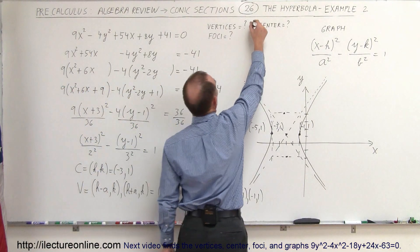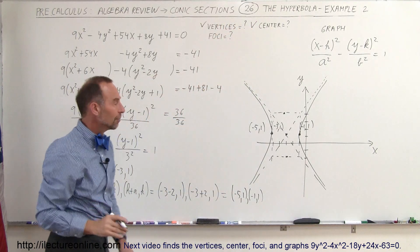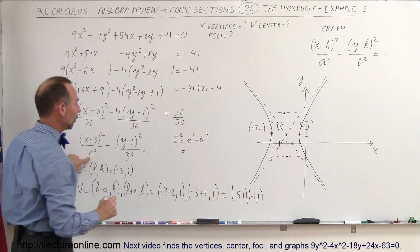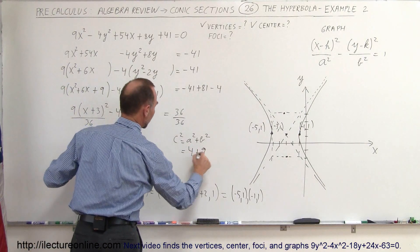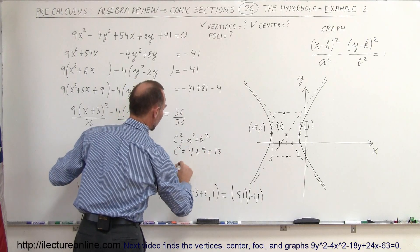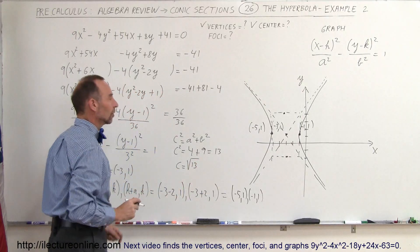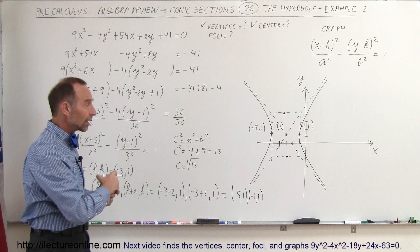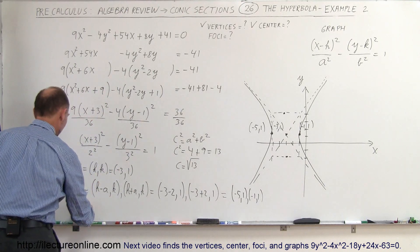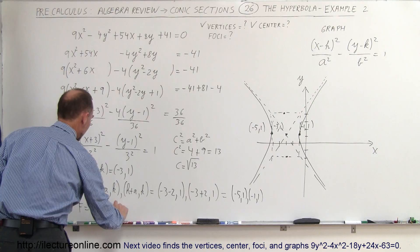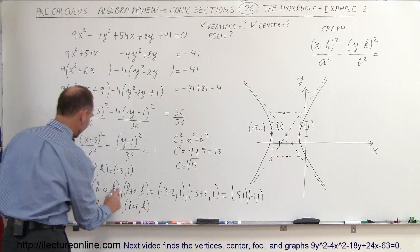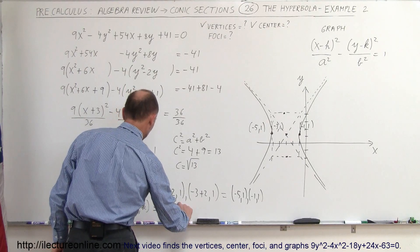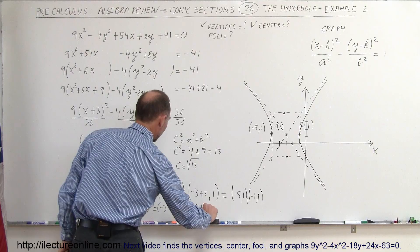Now for the foci. We use the formula c squared equals a squared plus b squared. Here a squared equals 4 and b squared equals 9, so c squared equals 13, meaning c equals the square root of 13. The foci are found by adding and subtracting c from the x-coordinate of the center: (h minus c, k) and (h plus c, k), giving us (minus 3 minus root 13, 1) and (minus 3 plus root 13, 1).